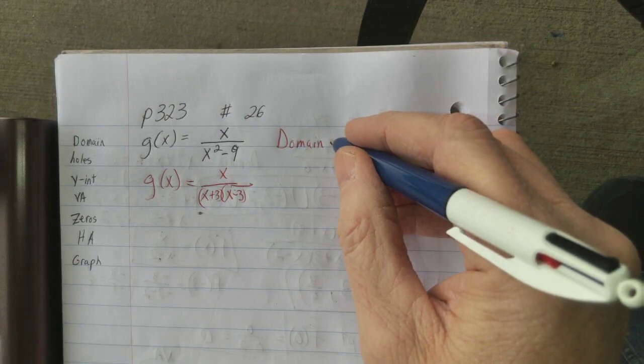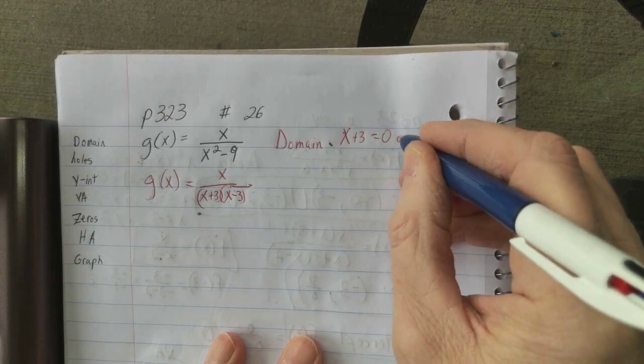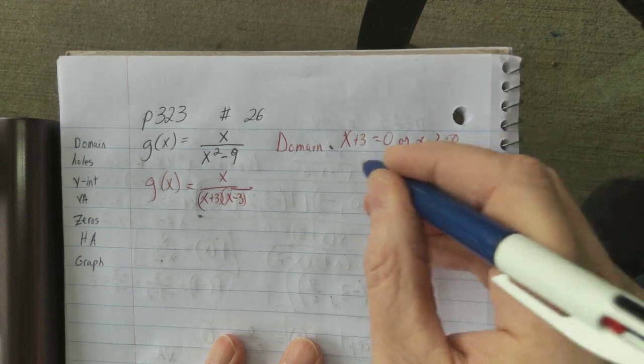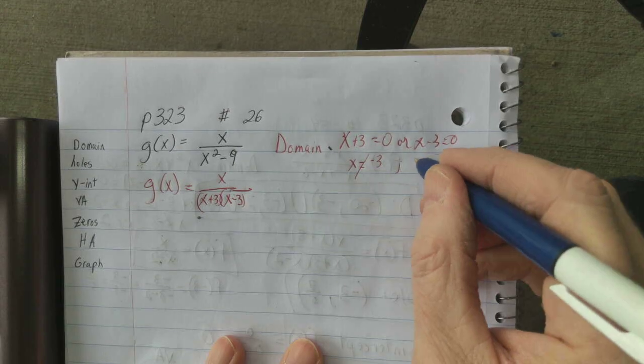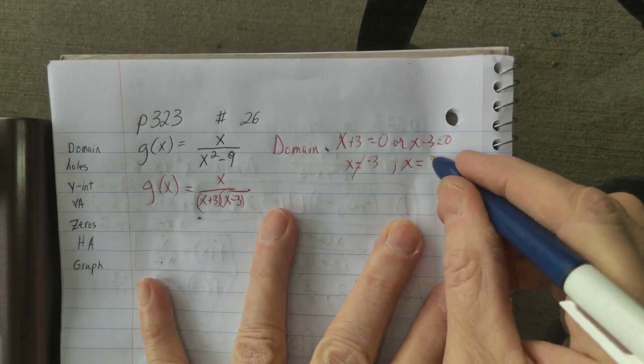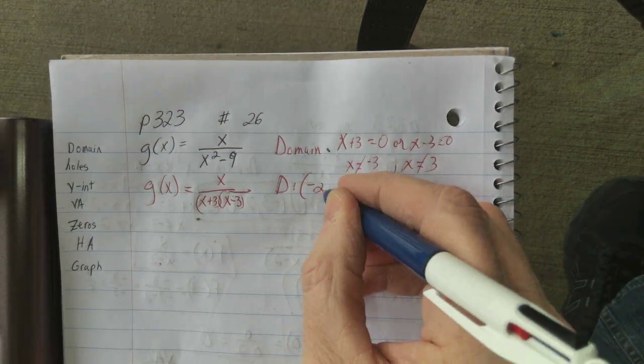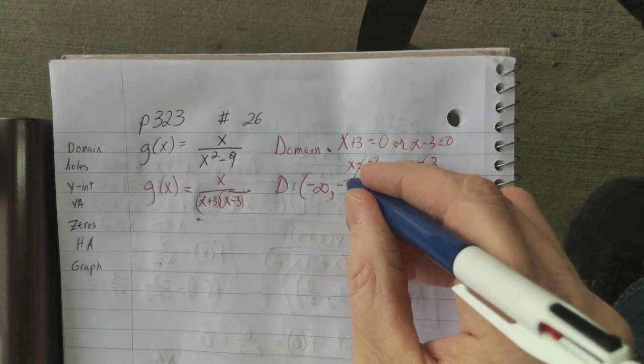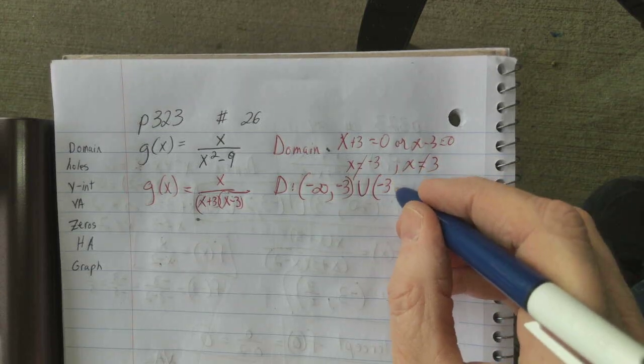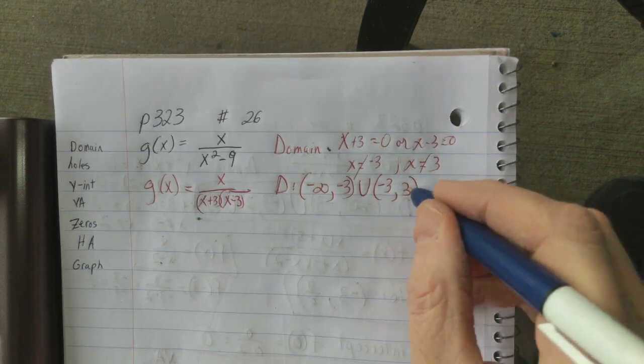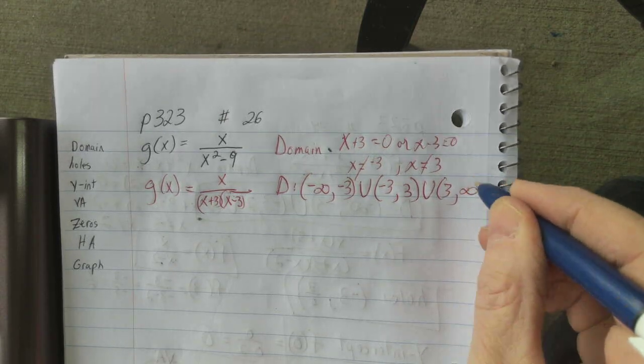The domain x plus 3 equals 0 or x minus 3 equals 0. x equals negative 3 and we don't want this to happen. This can't happen where x equals 3. So our domain here, we will go from negative infinity to negative 3, not including negative 3. And then on the other side of negative 3 to positive 3, non-inclusive. And then from 3 to infinity. So, there's our domain.